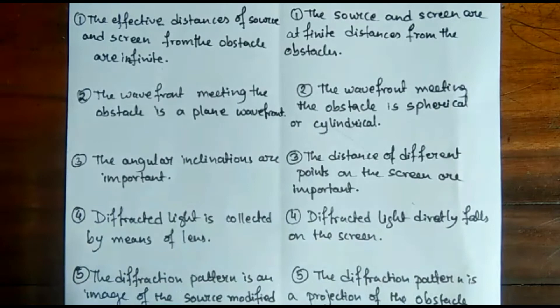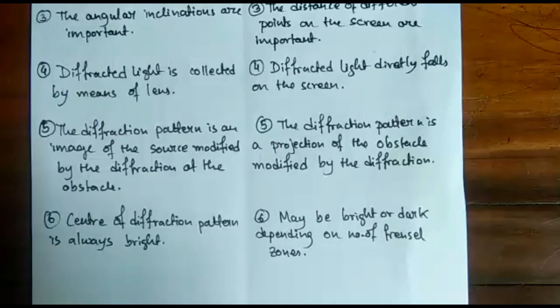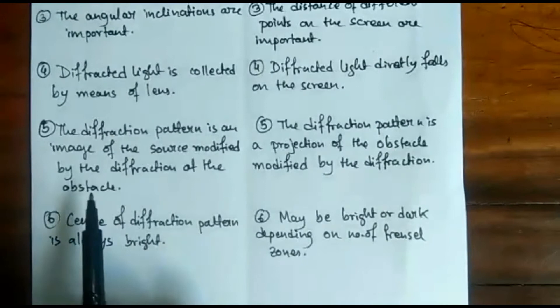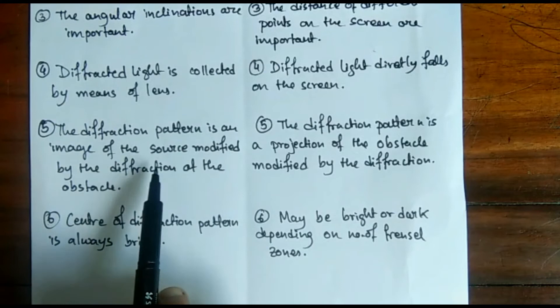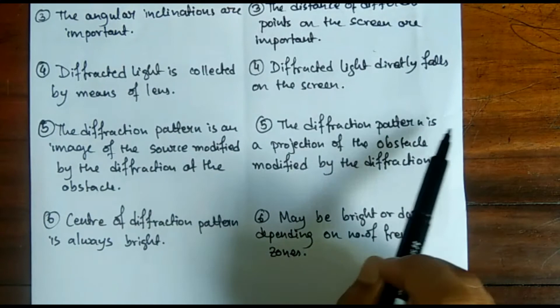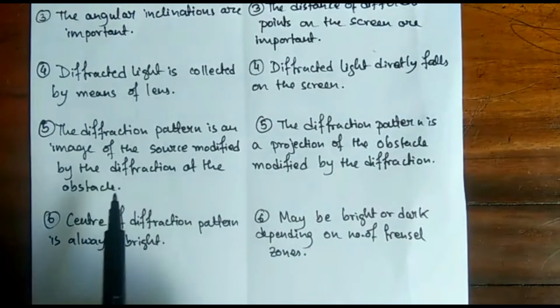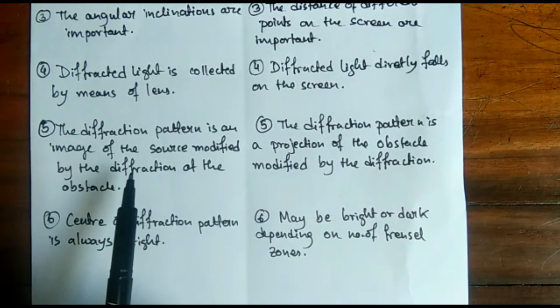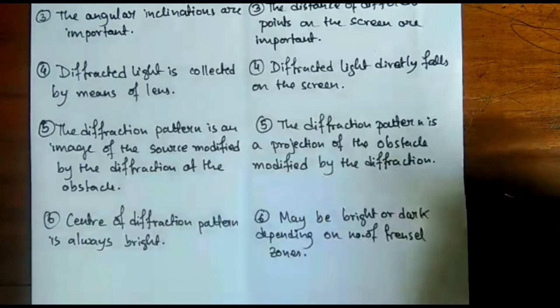According to the fifth point, for Fraunhofer diffraction the diffraction pattern is an image of the source modified by the diffraction at the obstacle. For Fresnel diffraction, the diffraction pattern is a projection of the obstacle modified by the diffraction. This means that for Fraunhofer diffraction the image you get on the screen depends upon the source, but for Fresnel the image depends upon the obstacle.